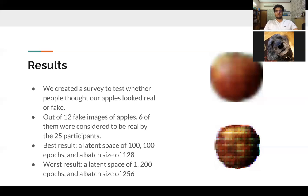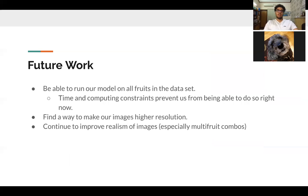For our future work, we want to be able to run a model on all the fruits in our dataset, but that proved to be very computationally infeasible because to load just one fruit into the model takes around five to six minutes, so loading 131 different fruits and vegetables would take a very long time and a lot of computing power which we simply didn't have. We also wanted to find a way to make our images a higher resolution and improve the realism of our images, especially multi-fruit combos. As we saw in our case where we combined apples and bananas, they didn't look very realistic. So yeah, that's our presentation. Thanks for watching.